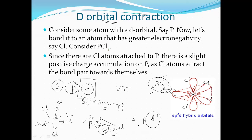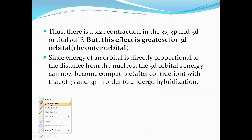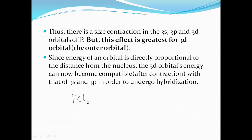All s, p, and d orbitals contract, but the contraction is greater for the d orbitals. As contraction occurs, size decreases, and since size is directly proportional to energy, energy also decreases. As a result, the s, p, and d orbitals now have comparable energy and can participate in hybridization. This is how the formation of PCl5 is explained based on d-orbital contraction.